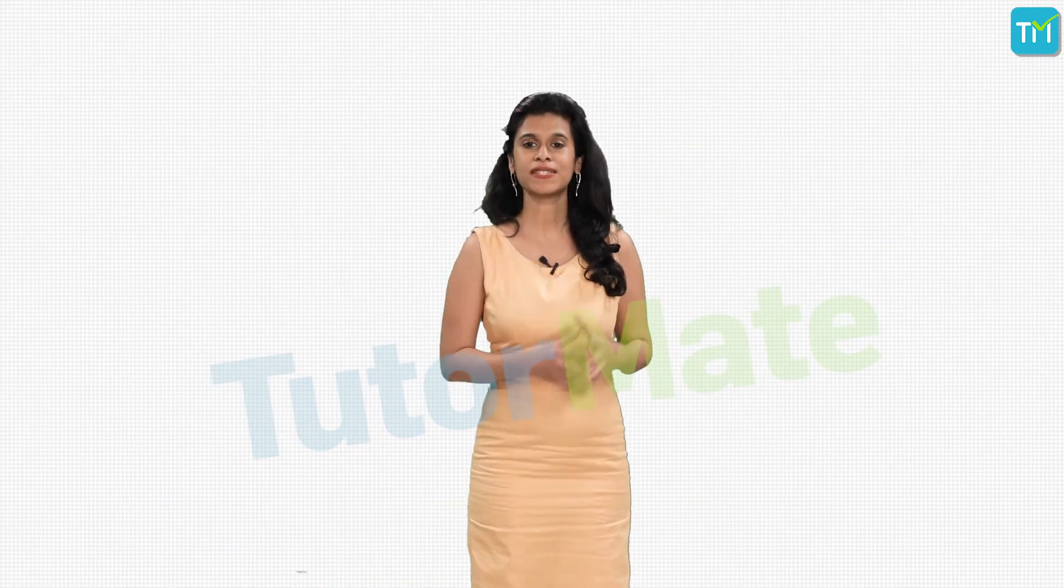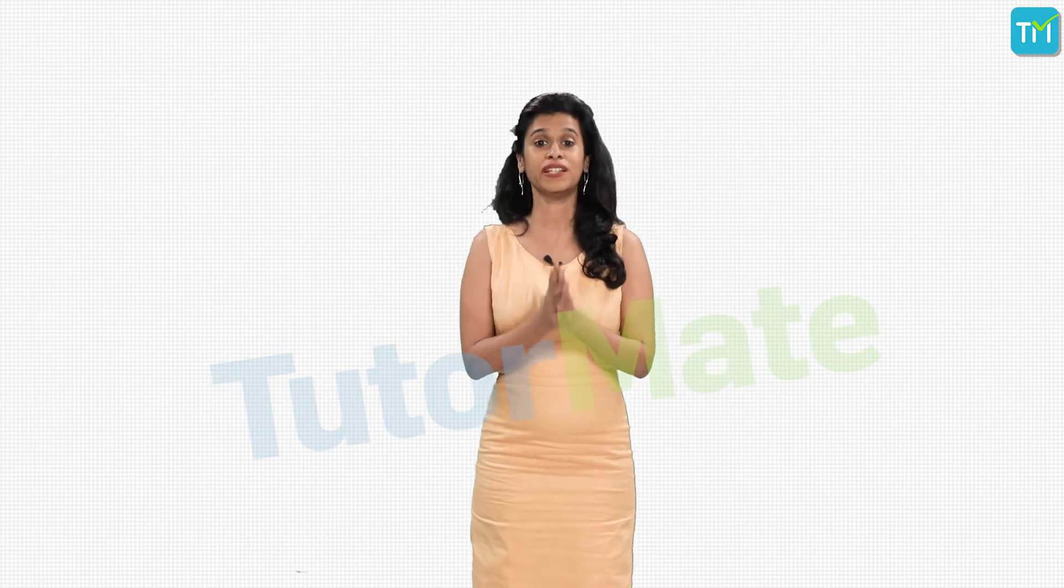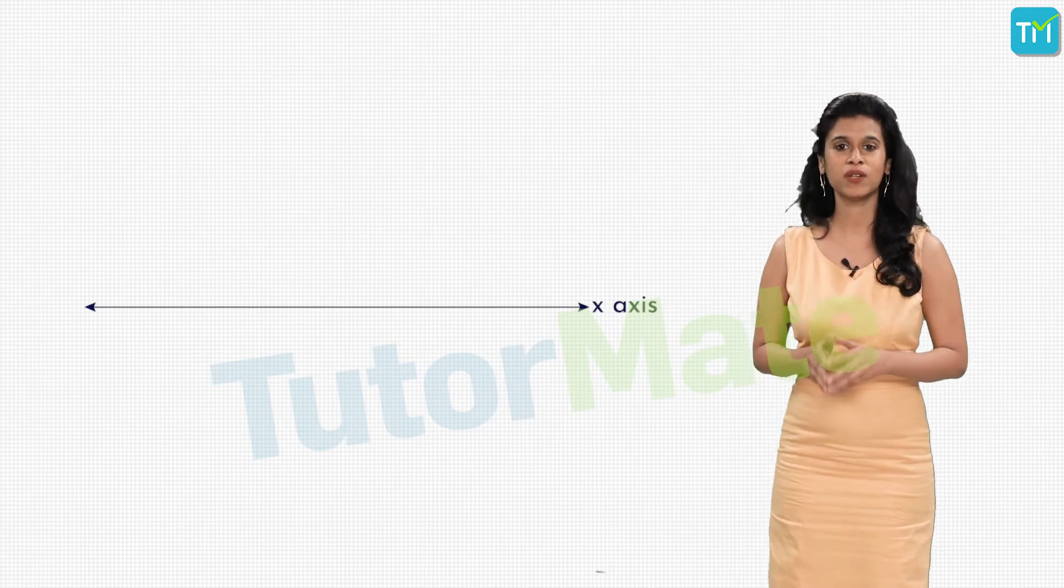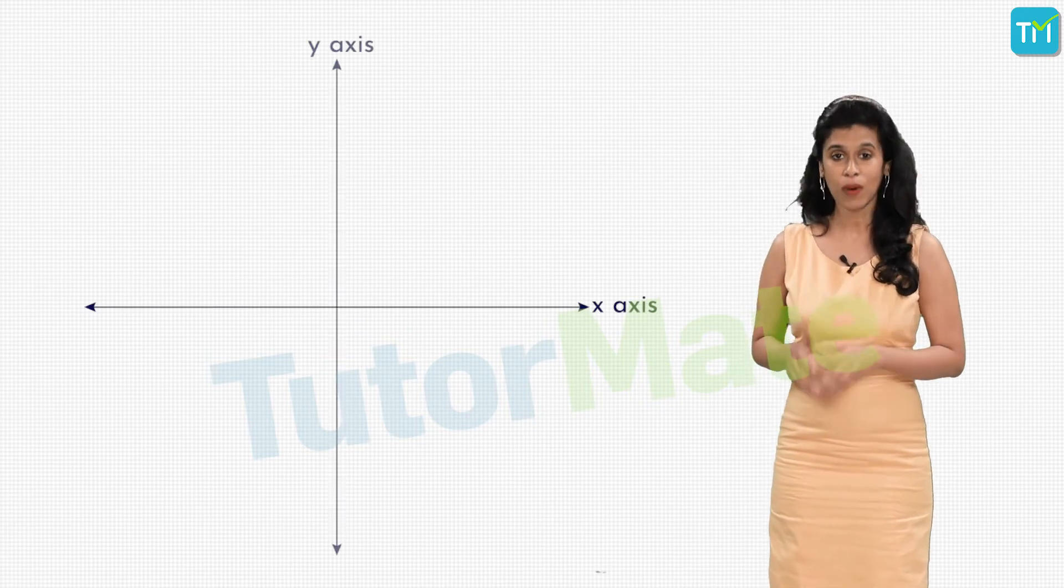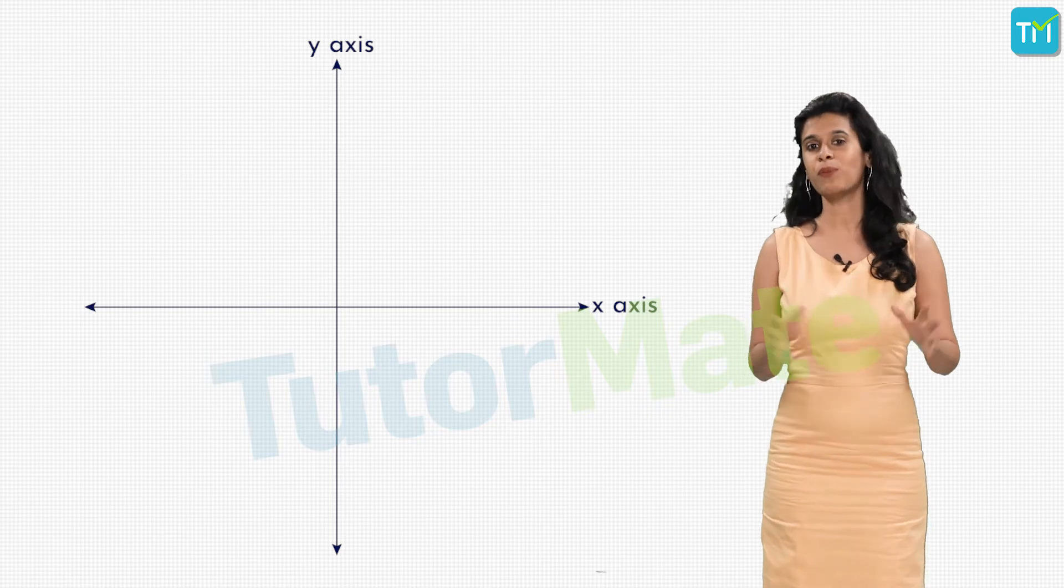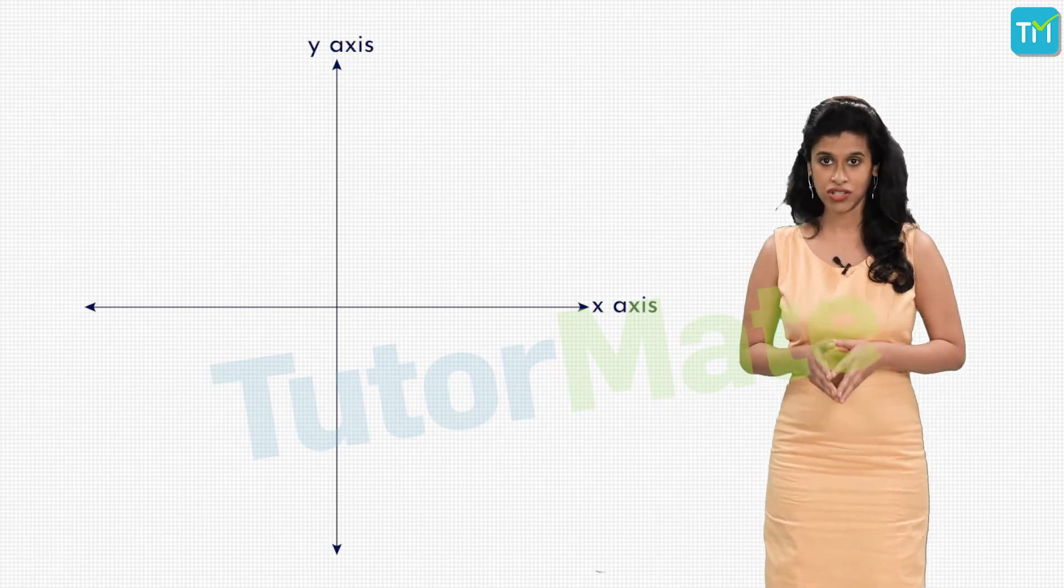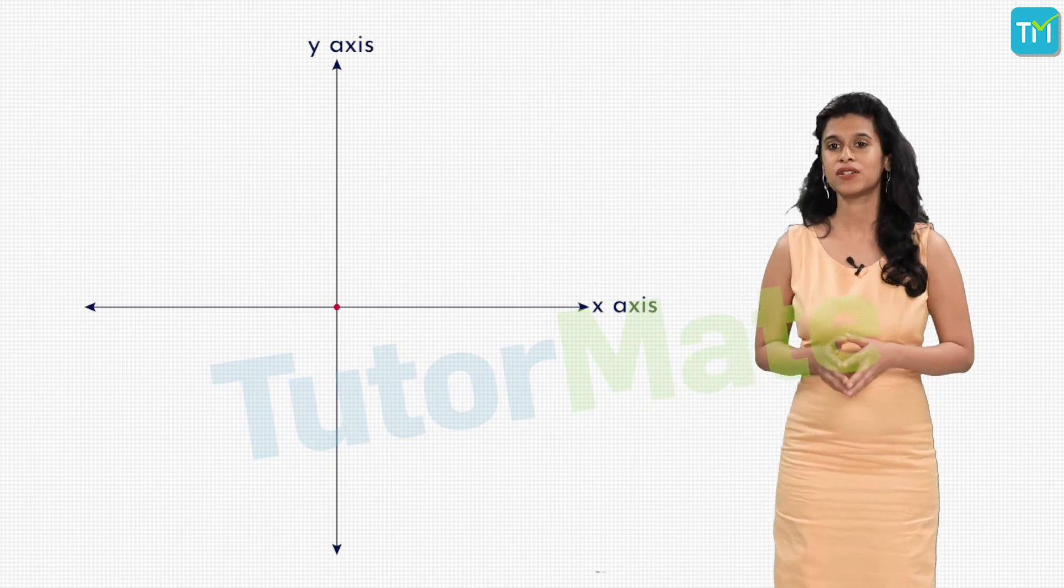Before we move on to a new concept in coordinate geometry, let's first revise what we learned in ninth standard. We saw how we can draw two lines perpendicular to each other where the horizontal line is known as the x-axis while the vertical line is known as the y-axis, and the point where both these lines intersect is called the origin, denoted by the capital letter O.